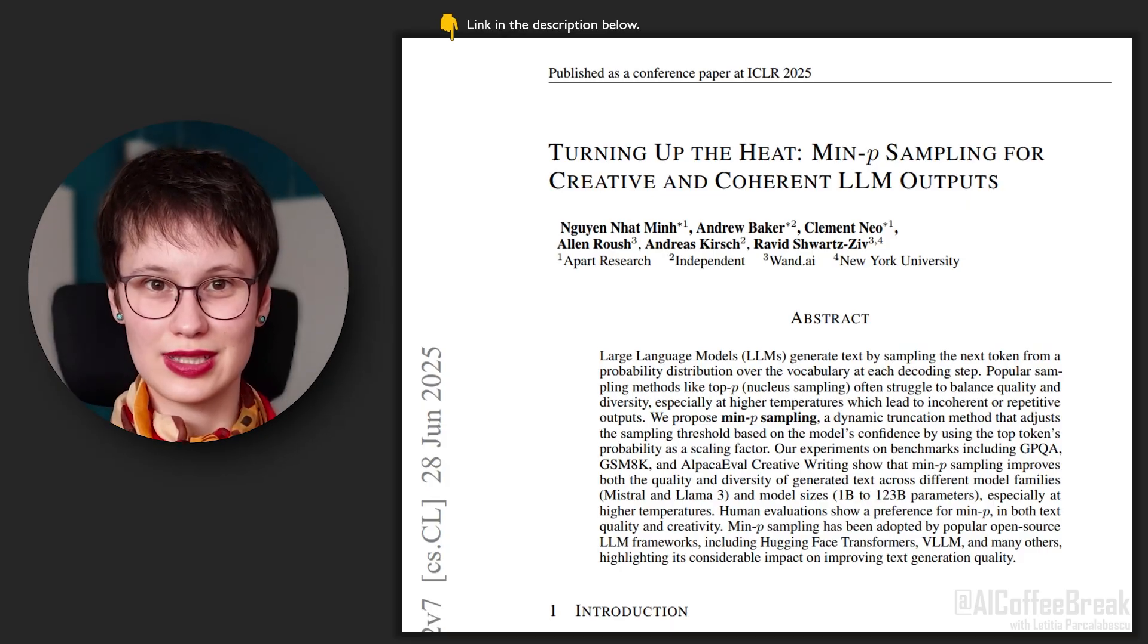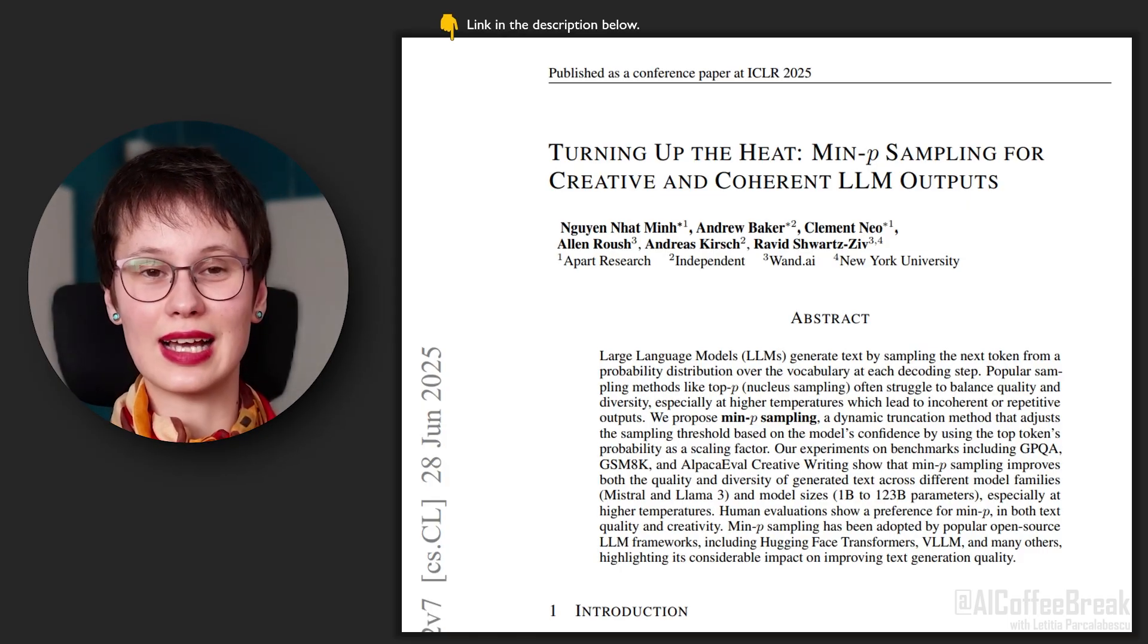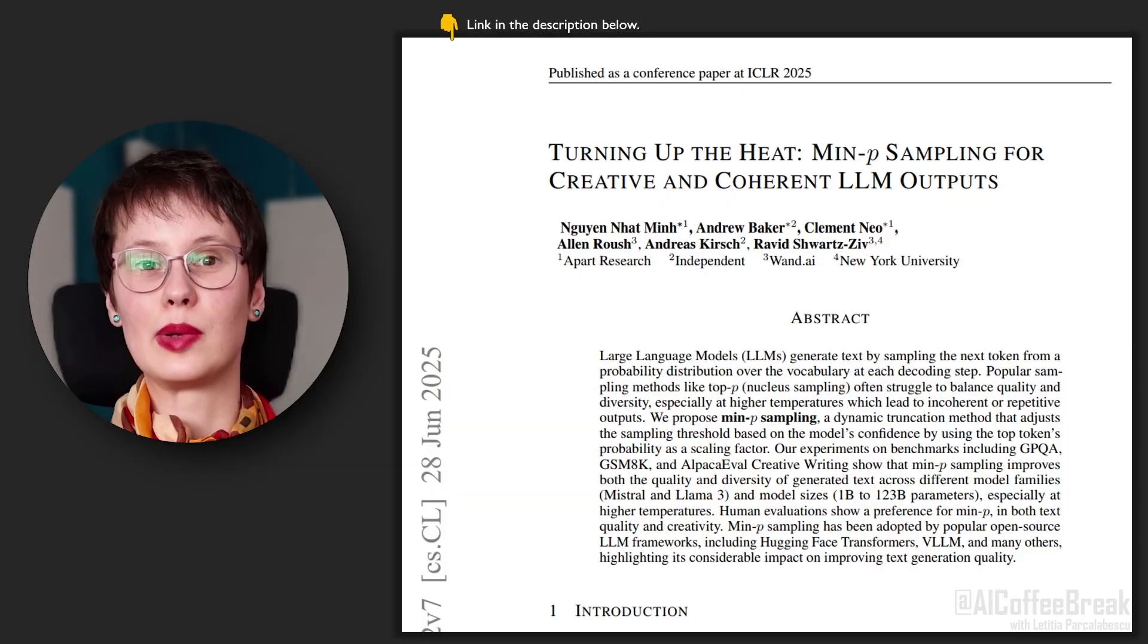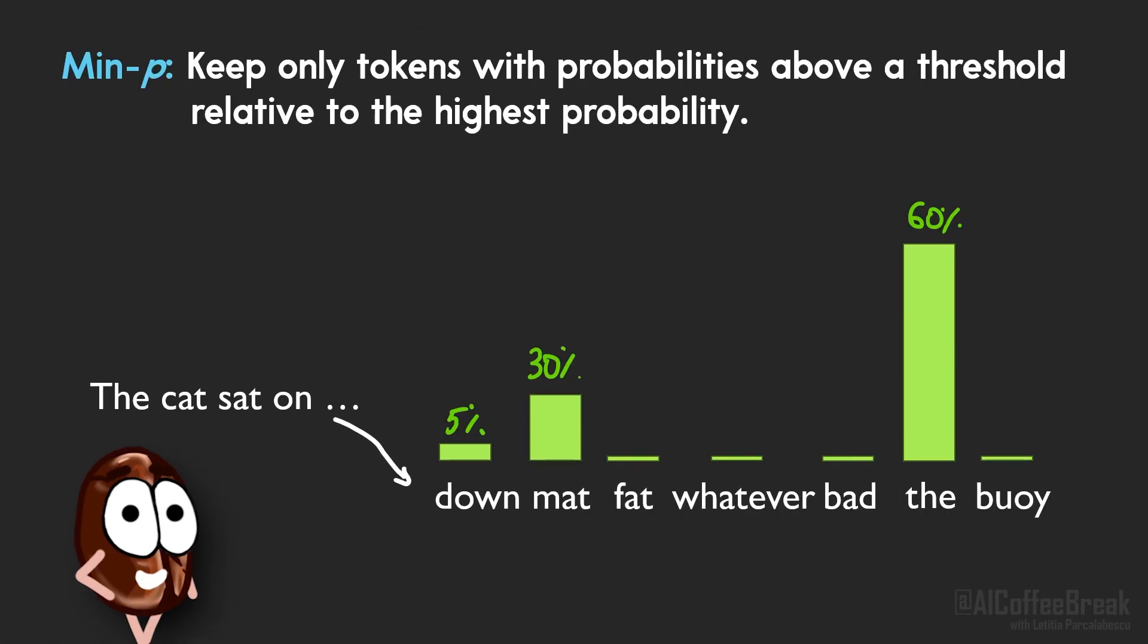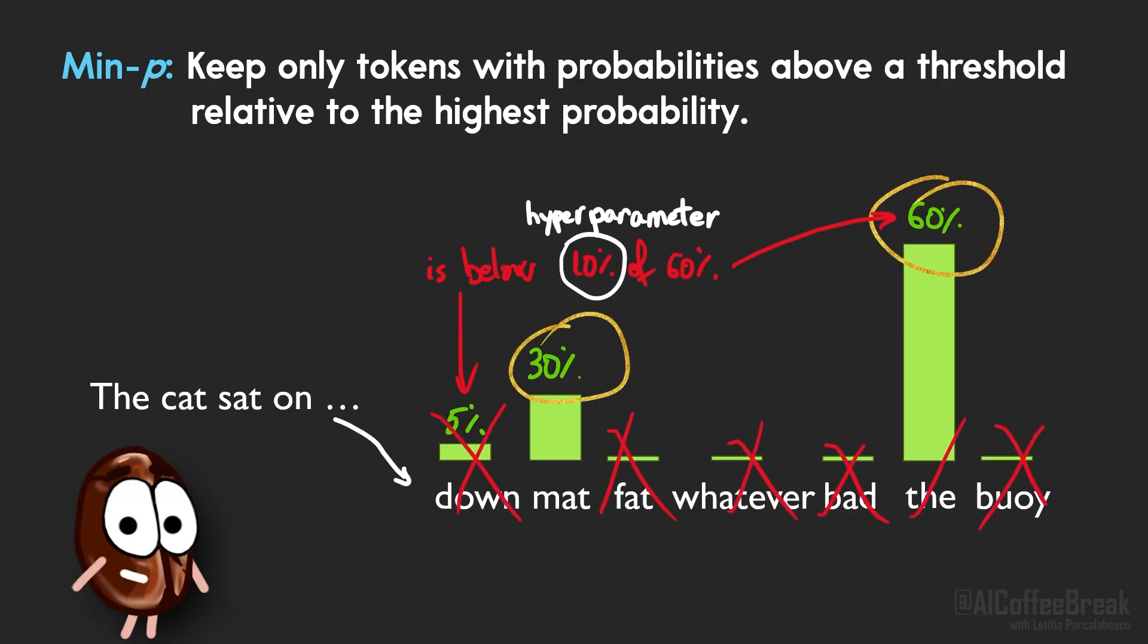Now here's a newer, increasingly popular strategy which I've seen at ICLR this year, called min-p sampling. Like top-p, it filters out probability tokens before sampling, but instead of using a fixed probability mass like 'keep the top 90%,' min-p is dynamic. It adapts based on the model's confidence. It looks at the probability of the most likely token and sets a dynamic cutoff based on that. For example, it might say only keep tokens that are at least 10% as likely as the top token, meaning keep everything above 6% and throw away the rest.